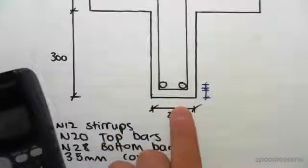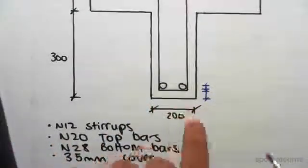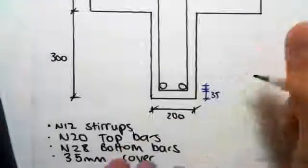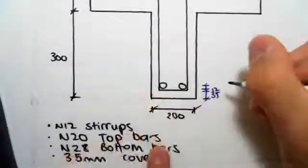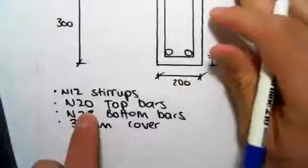So the total distance from the top of the section to the top bar will be 35 plus 12 plus 10, so 57 mils. Now the distance from the bottom here. So we learned from the bottom now. So once again, cover 35, the stirrups are 12 mils.